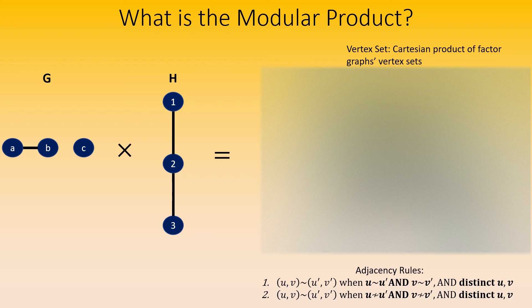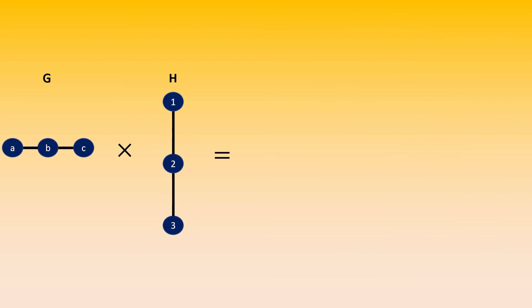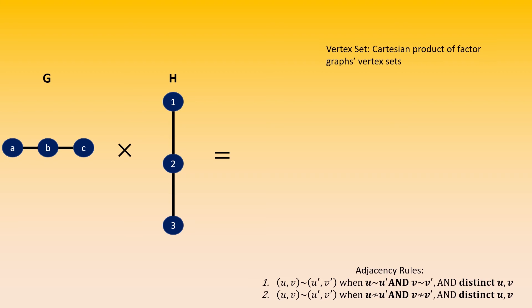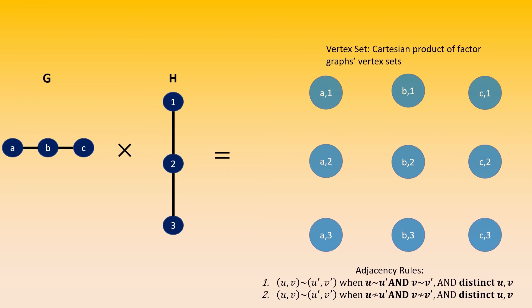Let's work through three examples now to get the hang of this product. First, what is the modular product of these two graphs? Remember that the vertex set of the modular product is the Cartesian product of the vertex sets of the factor graphs, giving us this as our vertex set. Now let's take the adjacencies one vertex at a time, with the adjacency rules in the bottom right-hand corner to help us out.